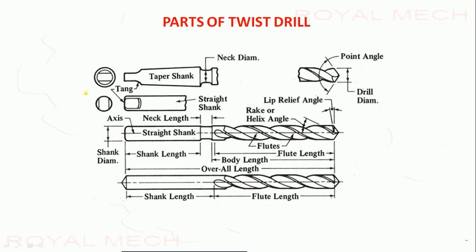Parts of a twist drill: there are two types of shank — one is taper shank and another is straight shank. The shank length is indicated accordingly. The twisted part is called flutes, the angle formed by the helix is called the helix angle, and the other angle shown is the relief angle.